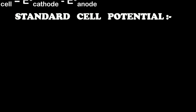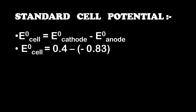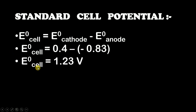Using the formula E°cell = E°cathode − E°anode, we get E°cell = 0.4 − (−0.83), and since minus minus becomes plus, we are left with E°cell = 1.23 volts. So the standard cell potential is 1.23 volts.